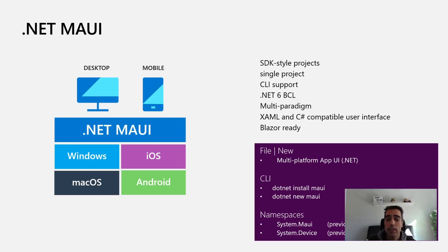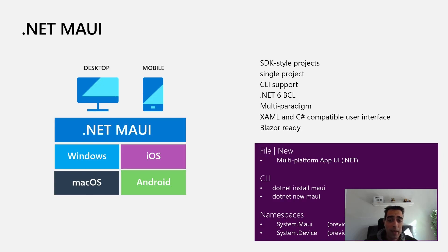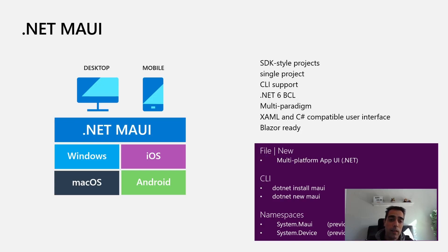To support iOS and Android it uses .NET for iOS and .NET for Android. For macOS it uses Mac Catalyst, and for Windows it uses WinUI. It uses SDK-style projects with a single project, has command line support — you can create or compile projects using the command line — and was released with .NET 7. It supports XAML and C# to create the user interface, and it's also Blazor ready, with a Blazor Hybrid project type that allows you to embed Blazor in a native frame using .NET MAUI.